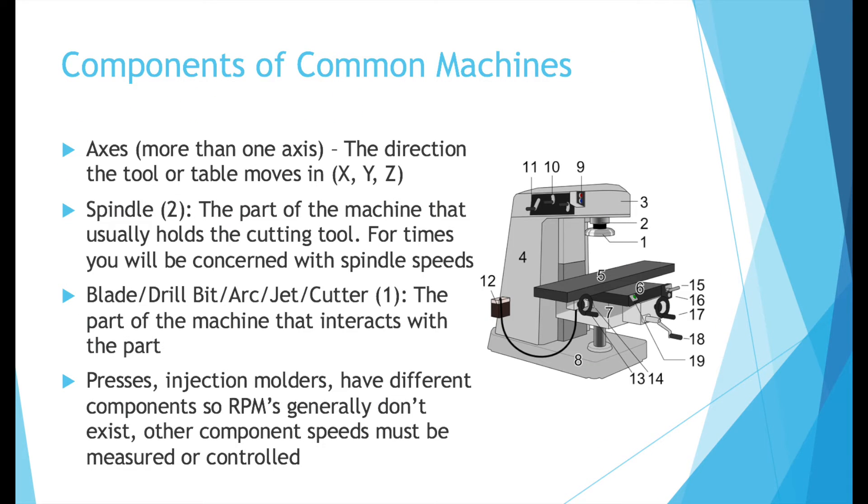Here are some components of common machines so that you can understand the terminology being used. Axes refers to more than one axis. This is the direction the tool or the table holding the part will move in. The most common three axes you'll hear about are the x-axis, the y-axis, and the z-axis, left to right, up and down, backwards and forwards, and it all depends what your viewpoint is.